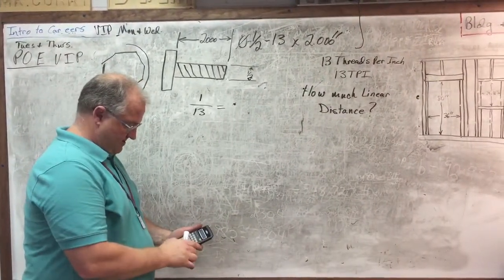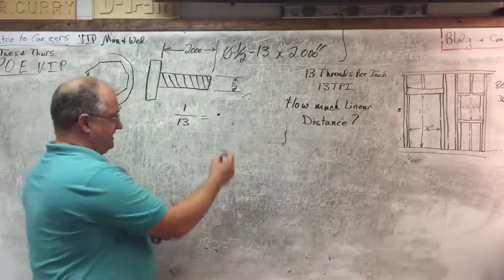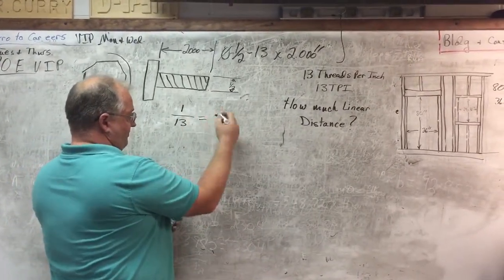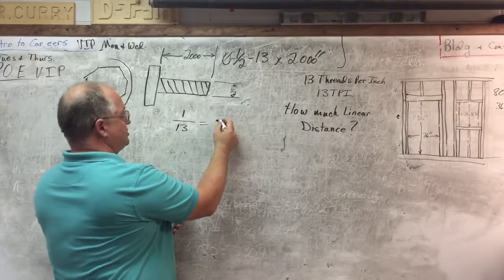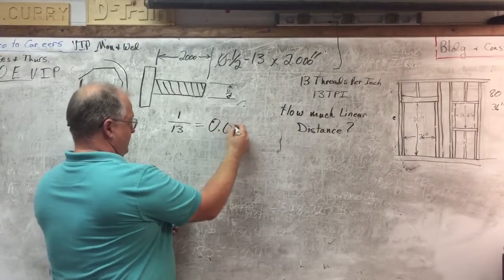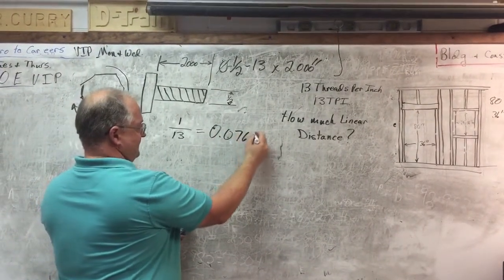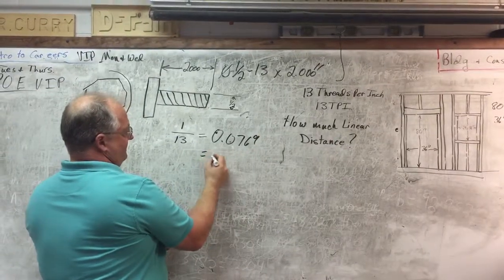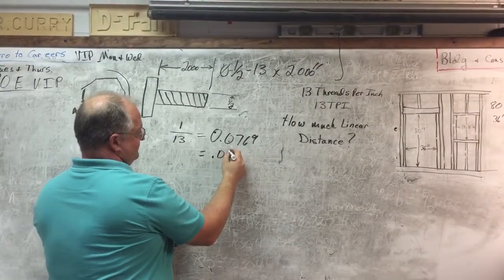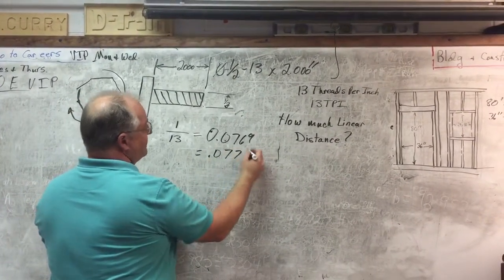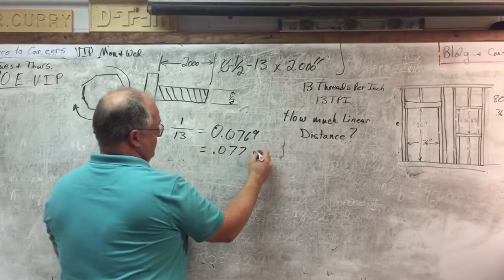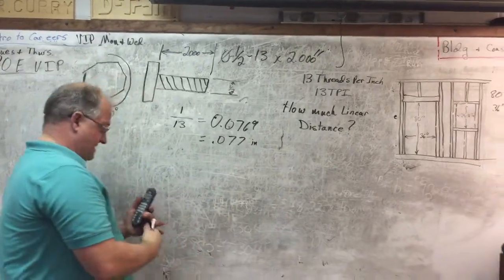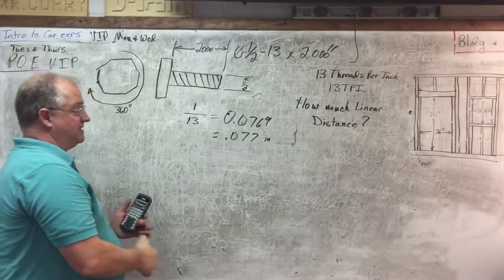So if you divide one divided by 13, we see that for one full revolution of the wrench, we are going to be 0.0769 or roughly equivalent to 77 thousandths of an inch. So 77 thousandths of an inch there in machina speak.